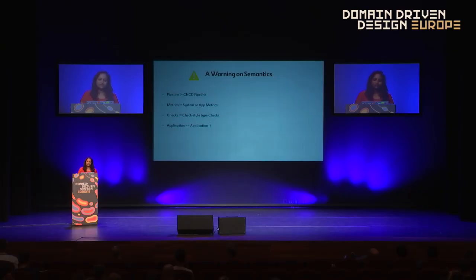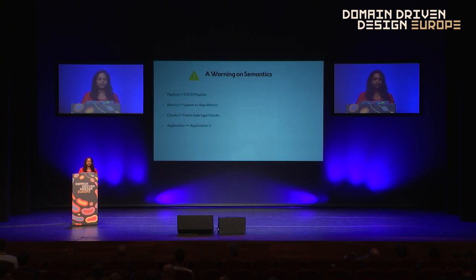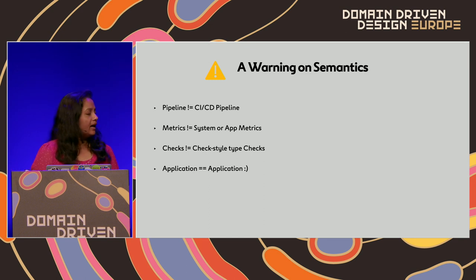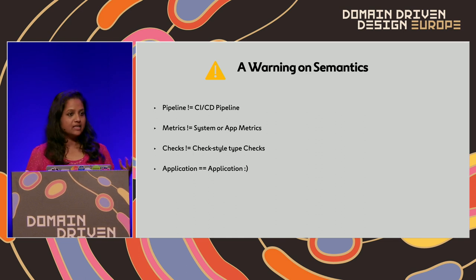Being in this room, I feel compelled to put a warning on some of the terminologies I'm going to use. If you're experienced in working with data you'll understand these immediately, but if you come from a traditional application development background you'll find this useful. When I say pipeline, I don't mean a Jenkins CI/CD pipeline — I mean a data pipeline that processes and does ETL on data and lands it in a data lake or similar place. When I talk about metrics, I mean data quality metrics, not system or operational metrics. And when I say checks, I mean the semantic rule-based checks that you run on those metrics.